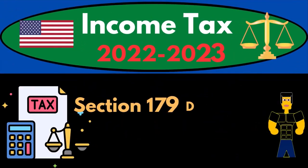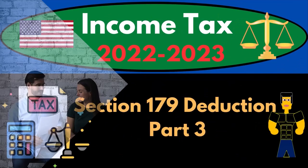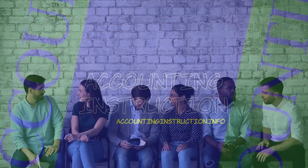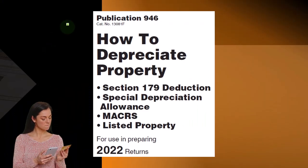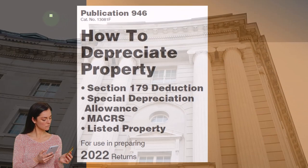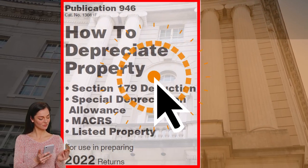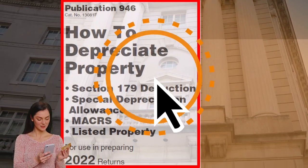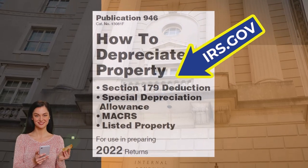Income Tax 2022-2023, Section 179 Deduction Part Number 3. Let's do some wealth preservation with some tax preparation. Most of this information comes from Publication 946, 'How to Depreciate Property,' tax year 2022, available on the IRS website at irs.gov.